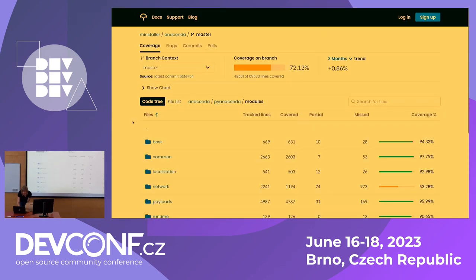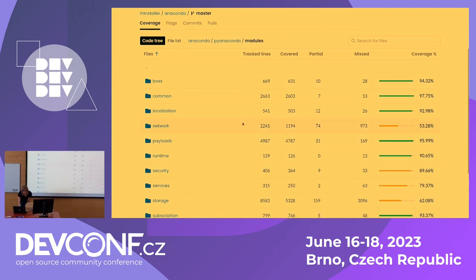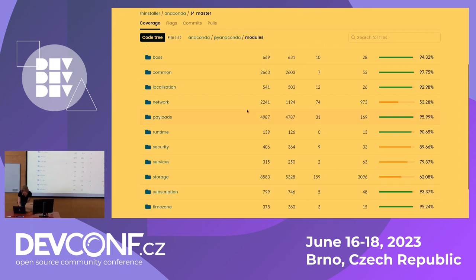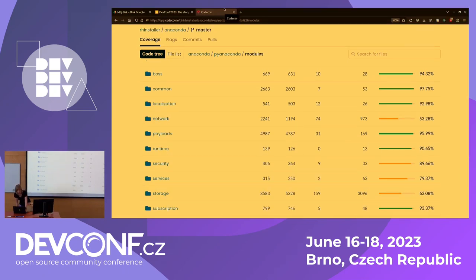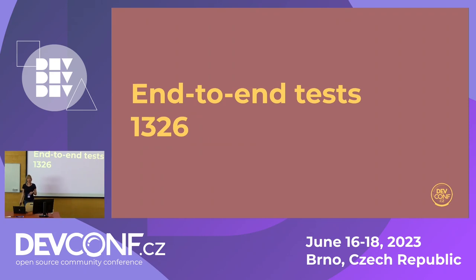Most modules have very high code coverage, except for the really big ones like the network module and the storage module. Payload is pretty good though. I think we did a pretty good job — when we started, we didn't even measure code coverage, but I think it was around 20%, and it wasn't great. The number of end-to-end tests we run daily on Fedora Rawhide with upstream changes is over a thousand, which is a lot — because when we started, those tests didn't even work properly. Having these run daily lets me sleep at night.